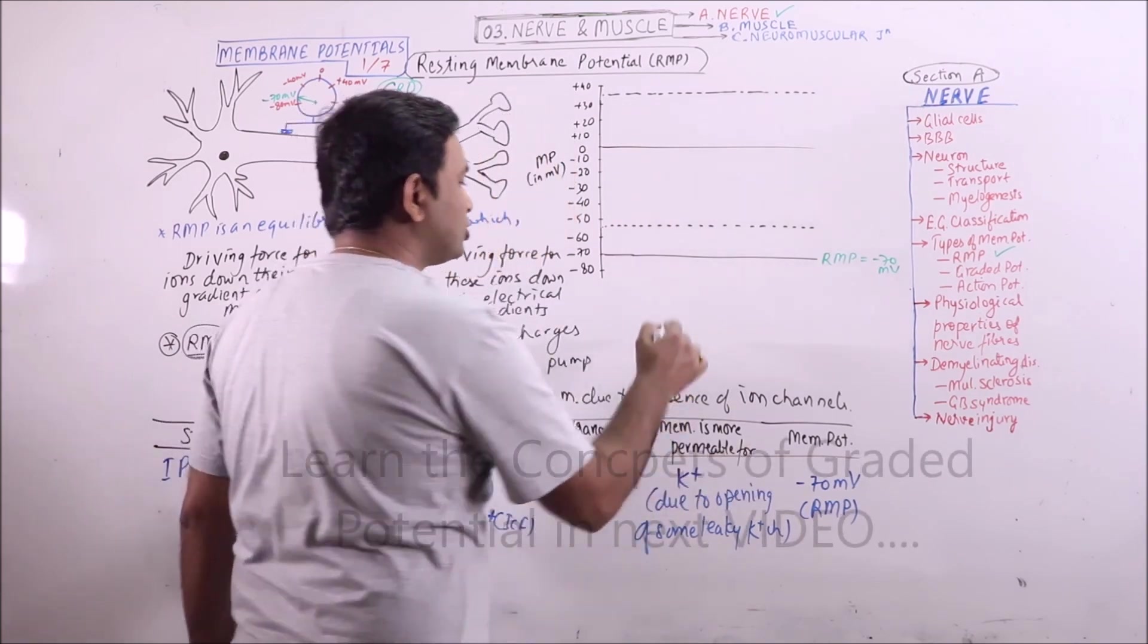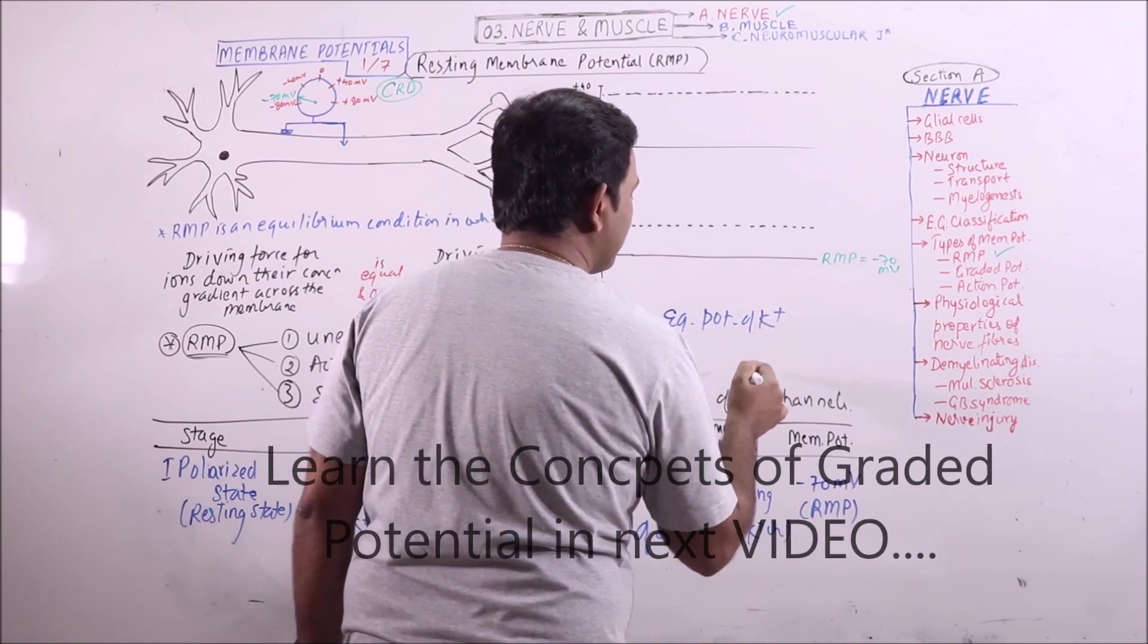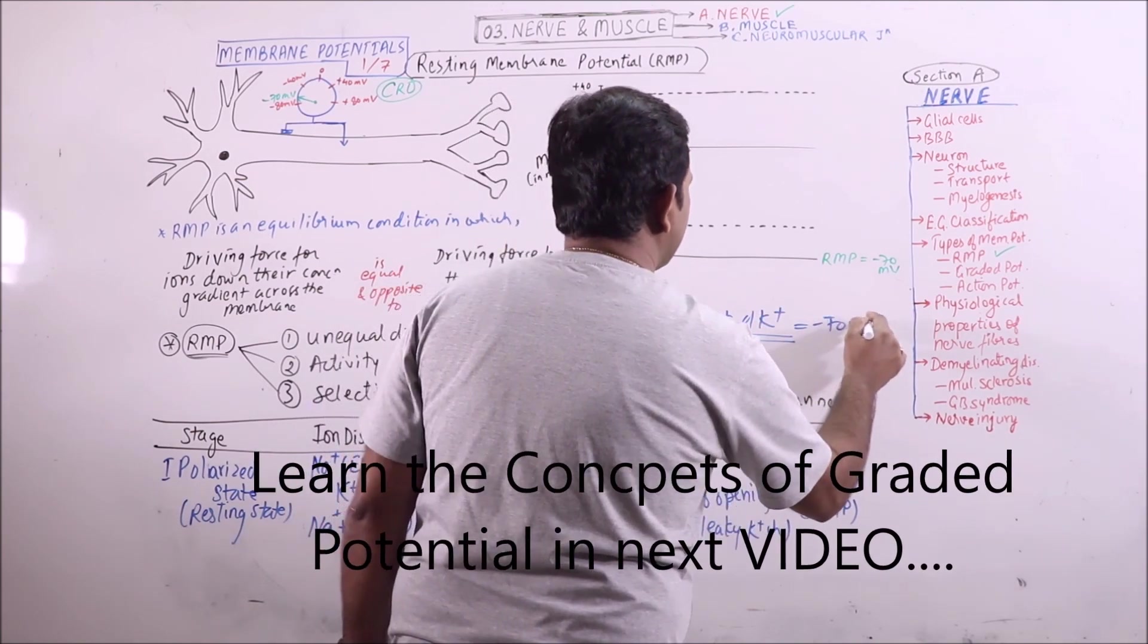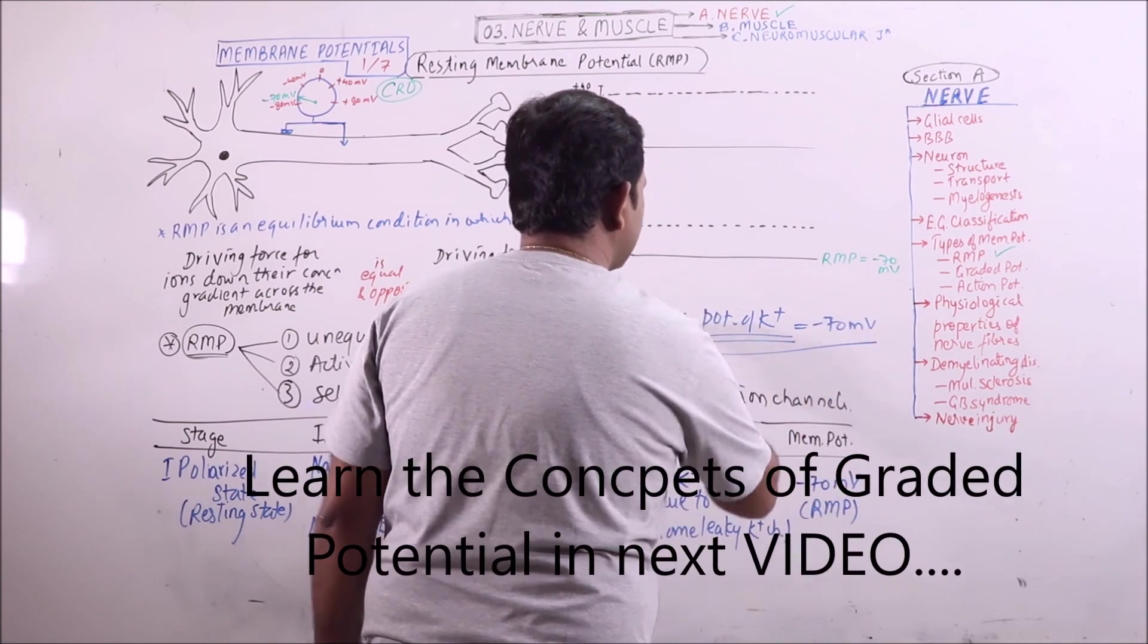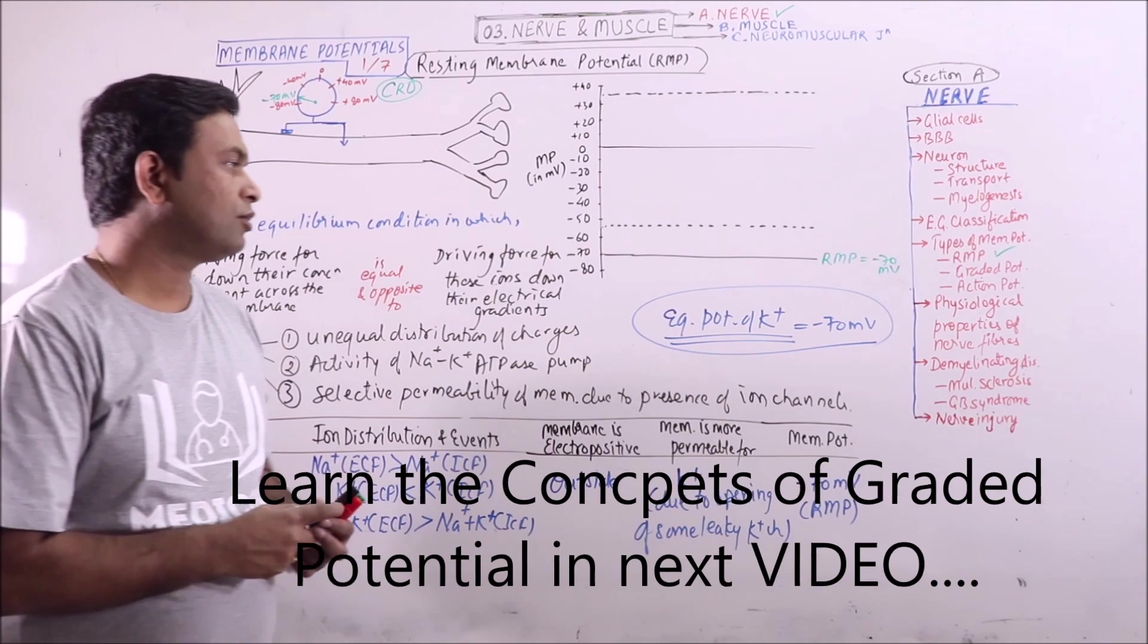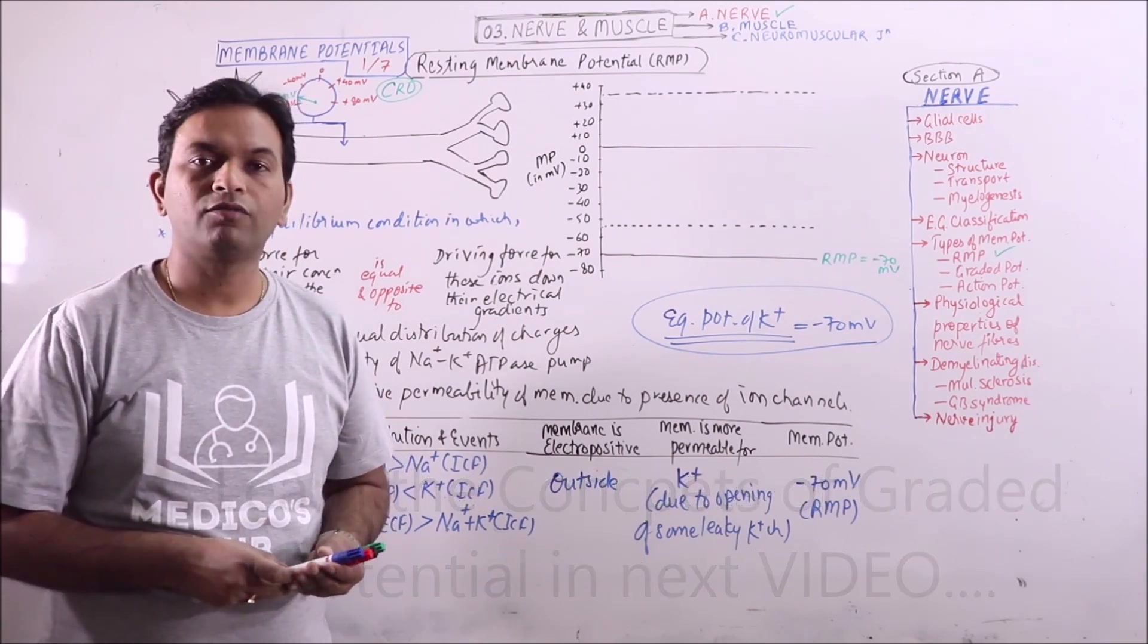This RMP is very close to the equilibrium potential of potassium ion, that is minus 70 millivolts, because at resting phase some leaky potassium channels always remain open. So, this is the resting membrane potential of neuron.